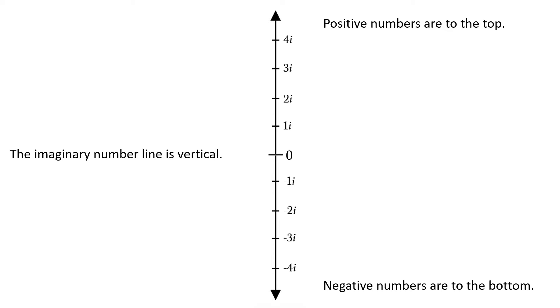And then instead of negative 1, negative 2, negative 3, negative 4, we go negative 1i, negative 2i, negative 3i, etc. Now of course when we're doing our math we'd never put 1i. 1 times i is just i, but on the number line it's got a 1i.